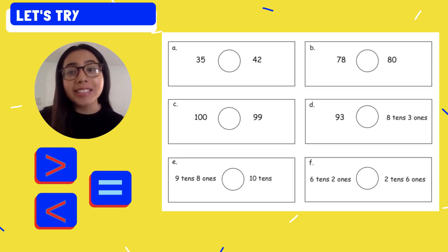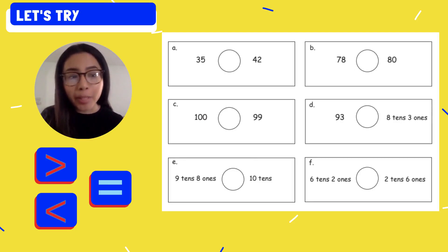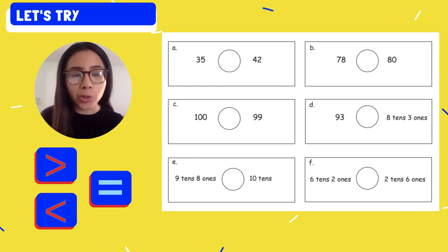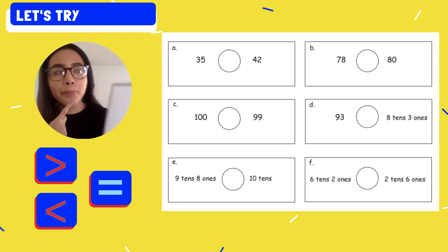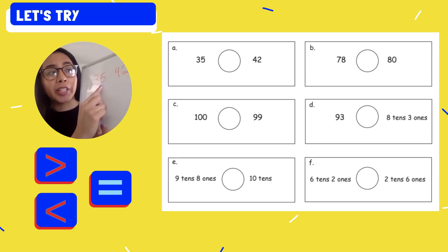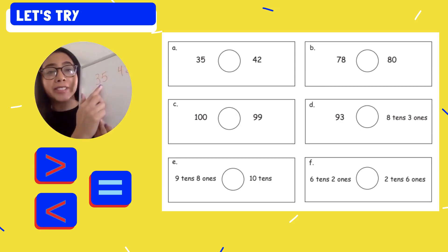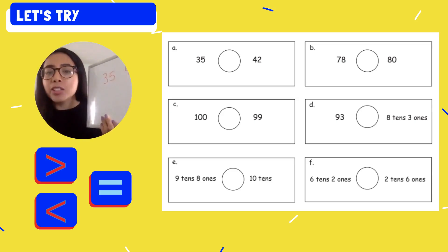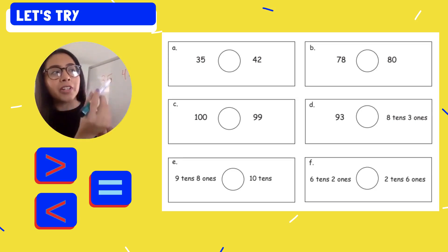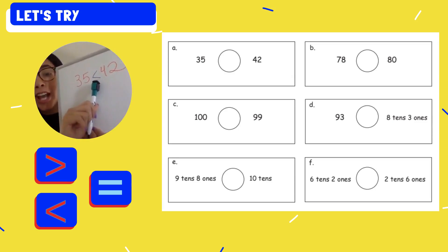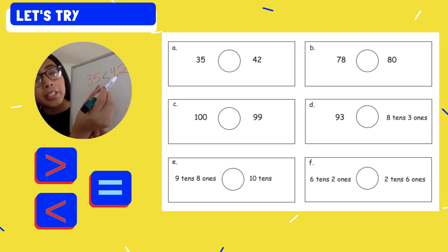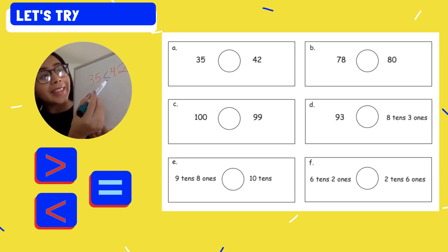Alright Kipsters, get ready to help decide which symbols we're going to use. We're going to compare first 35 and 42, letter A. Is 35 greater than or less than 42? 35 is a smaller number — it's less than. Think about which symbol will show that 35 is less than 42. See how the alligator's mouth is open towards the bigger number. This says 35 is less than 42.